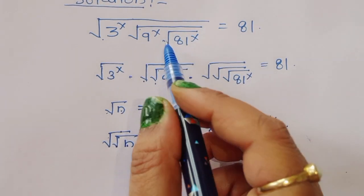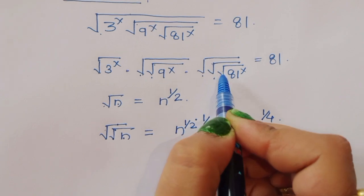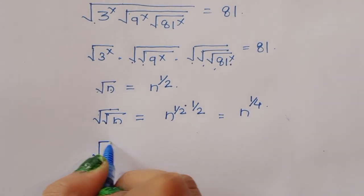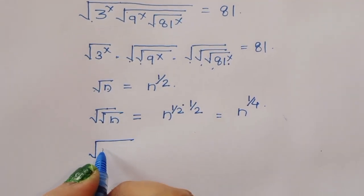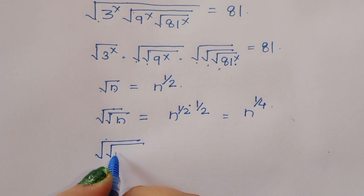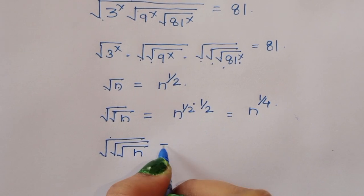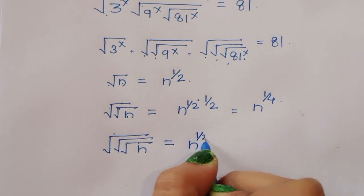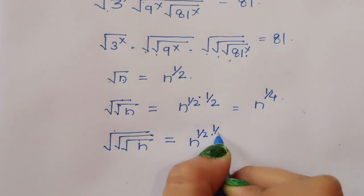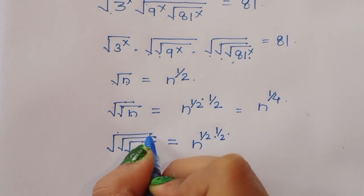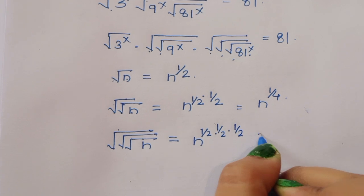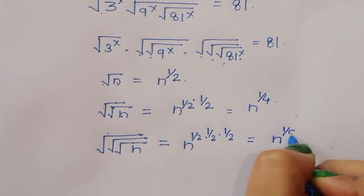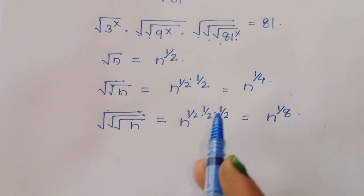Next, for square root of square root of square root of n — that is the third term with 81 — we get n power 1 by 2 times 1 by 2 times 1 by 2, which equals n power 1 by 8.